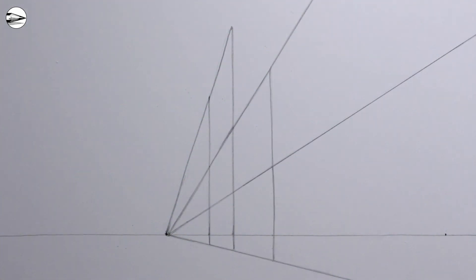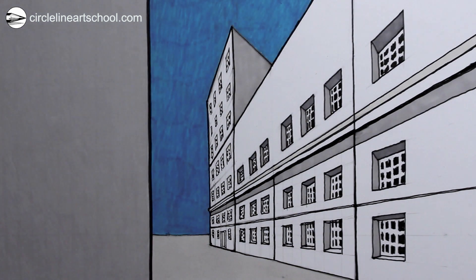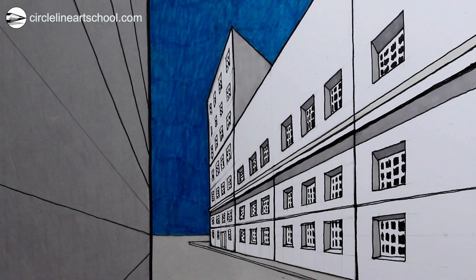Hi Tom here, in this week's Circle Line Art School video I'll show you one way to draw using two-point perspective a row of buildings at an angle.